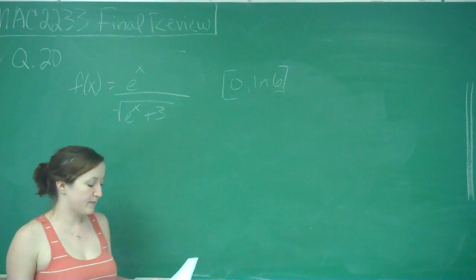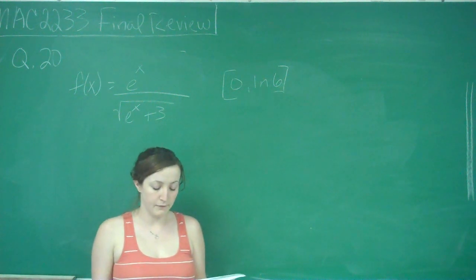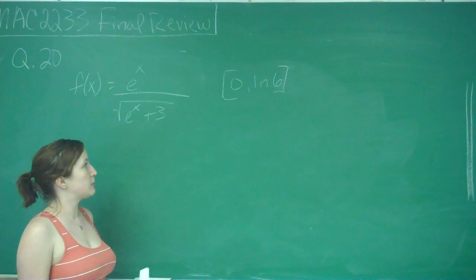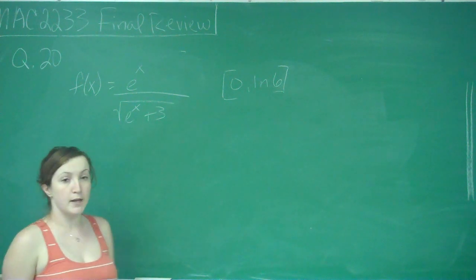This is question number 20 and it wants us to find the area of the region under the graph of f(x) equals e to the x over the square root of e to the x plus 3 on the interval from 0 to ln of 6.